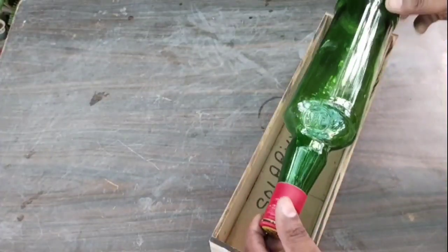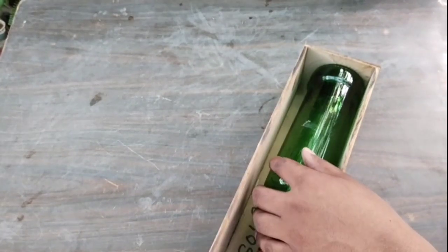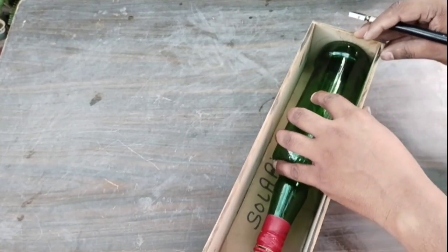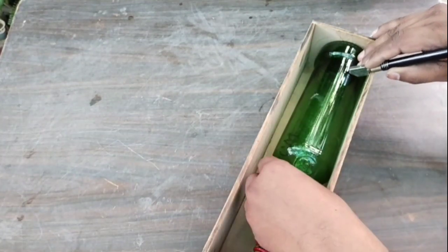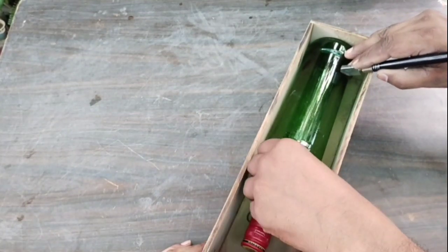Here we have used this type of bottle. Like the same first method, we will mark the bottle with a cutter by placing it in the box.